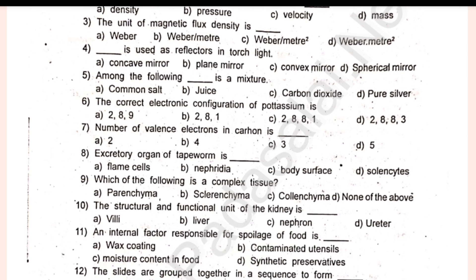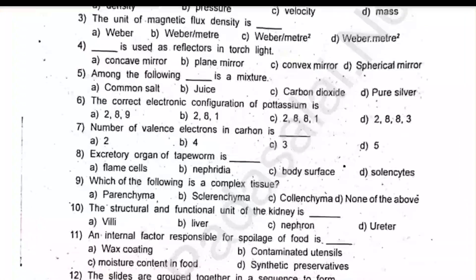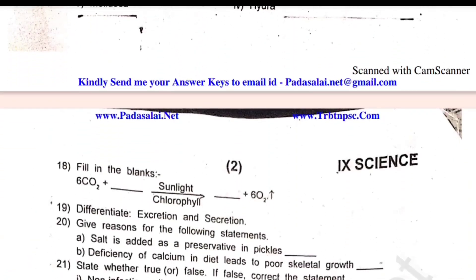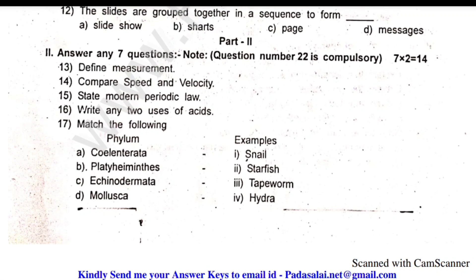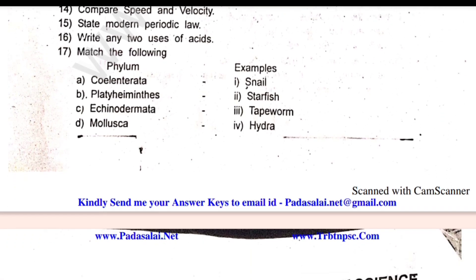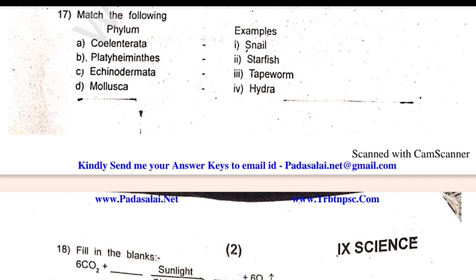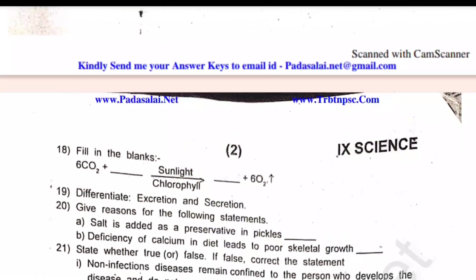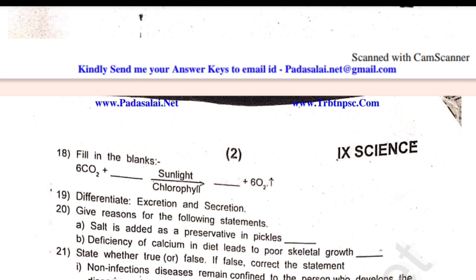Part 2 is 2 marks, questions 7 to 14. Compulsory question: if a certain number of electrons pass through a cross-section in 50 seconds, what is the measure of current? This is a compulsory question.